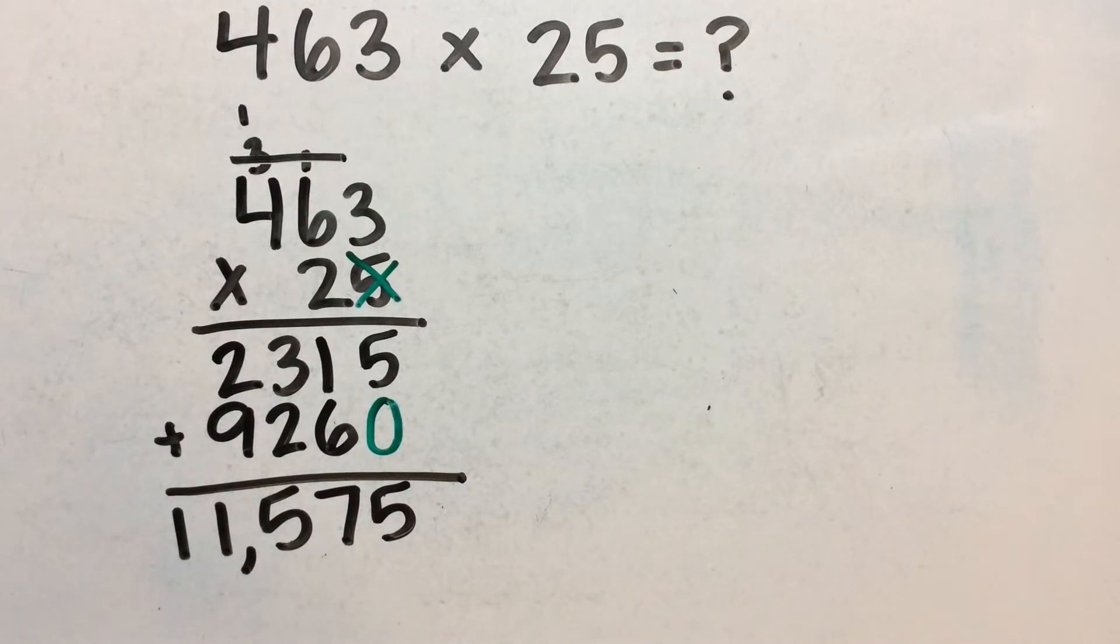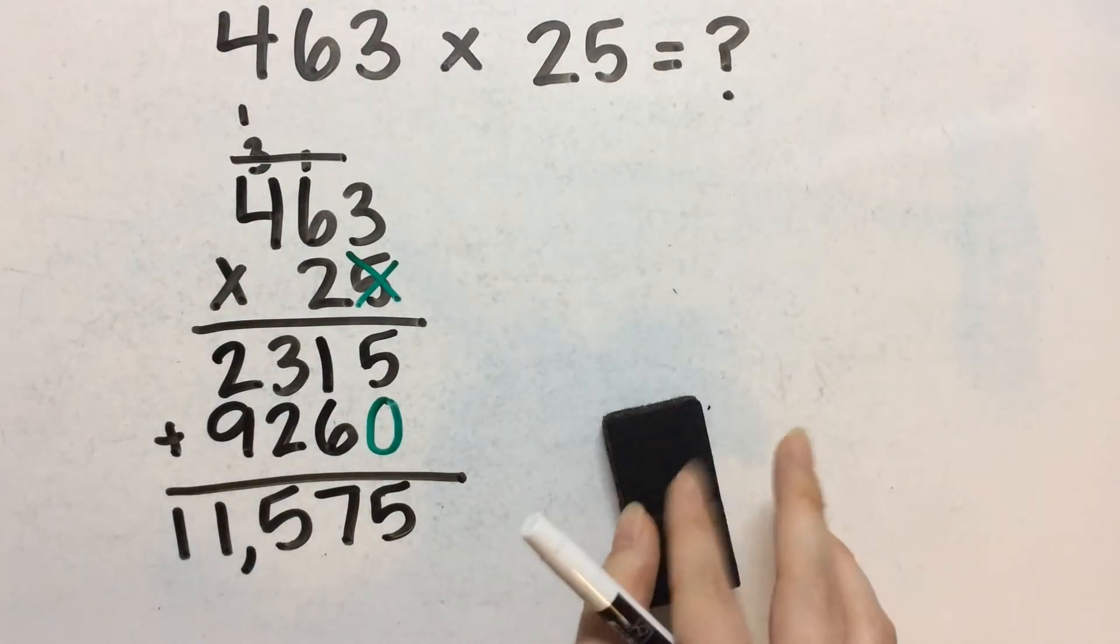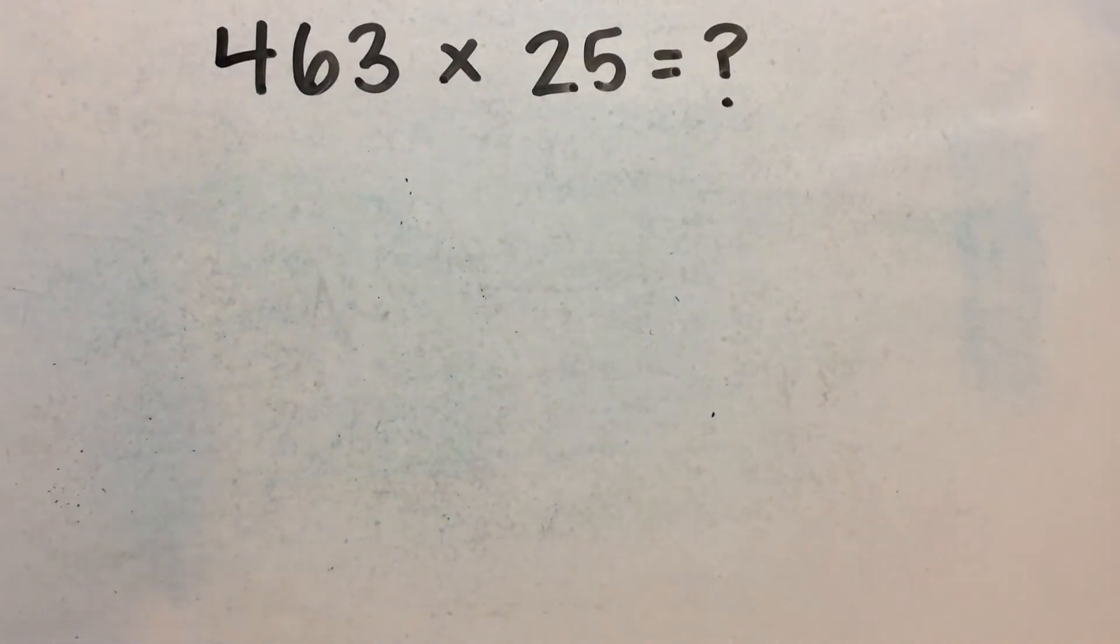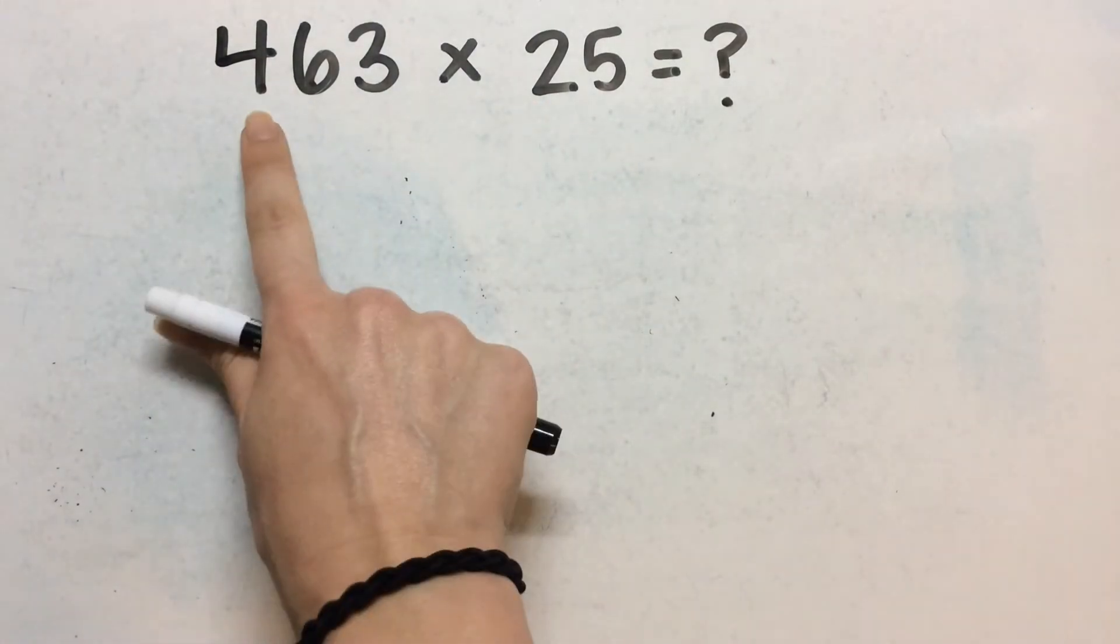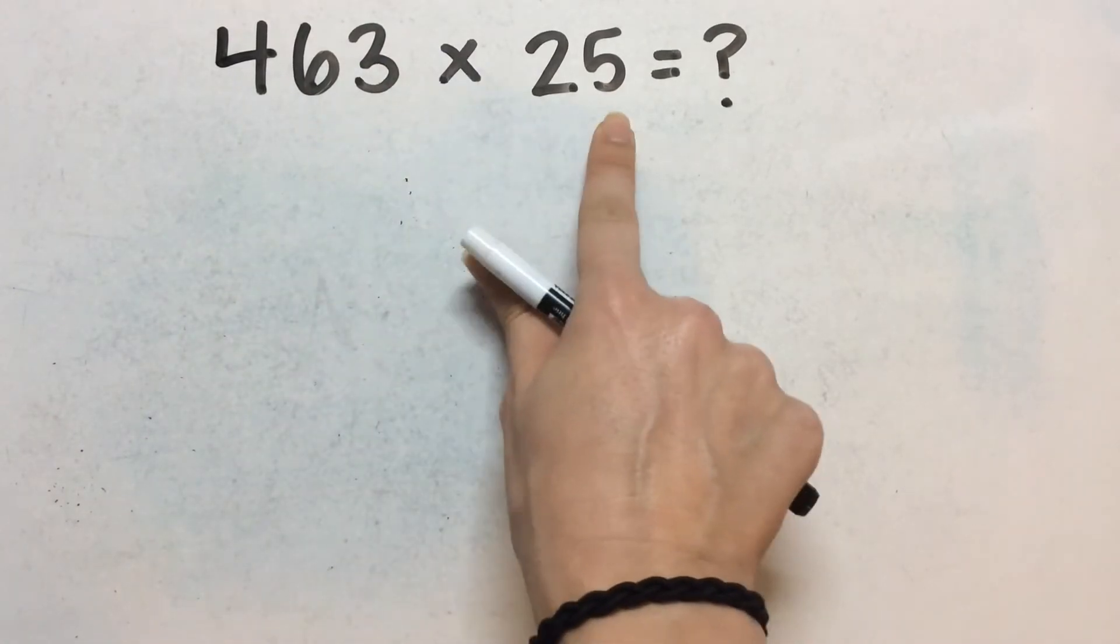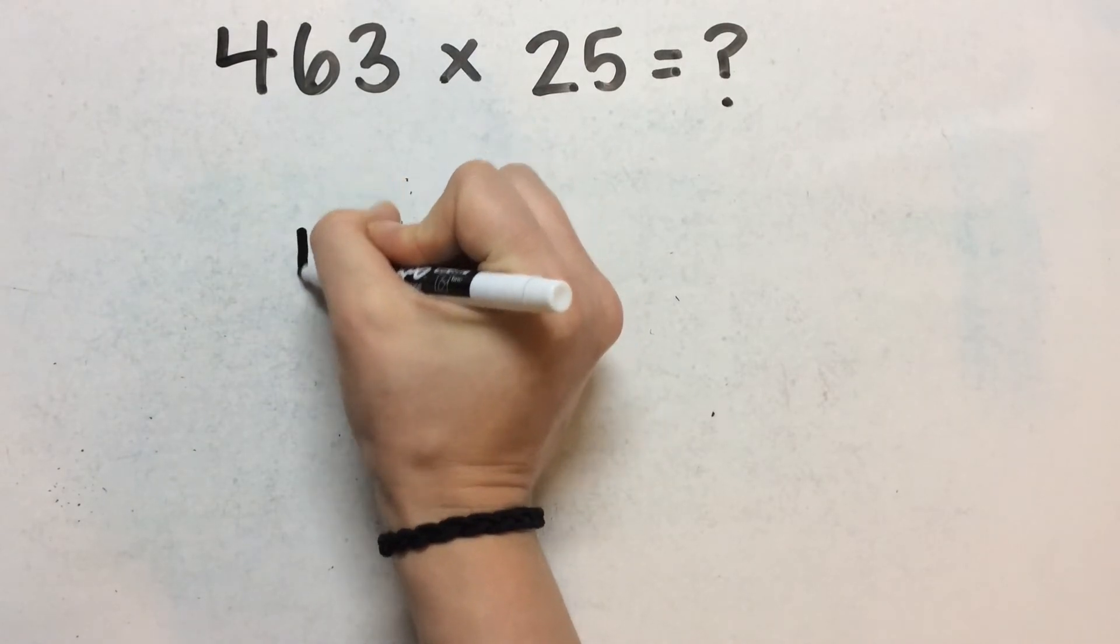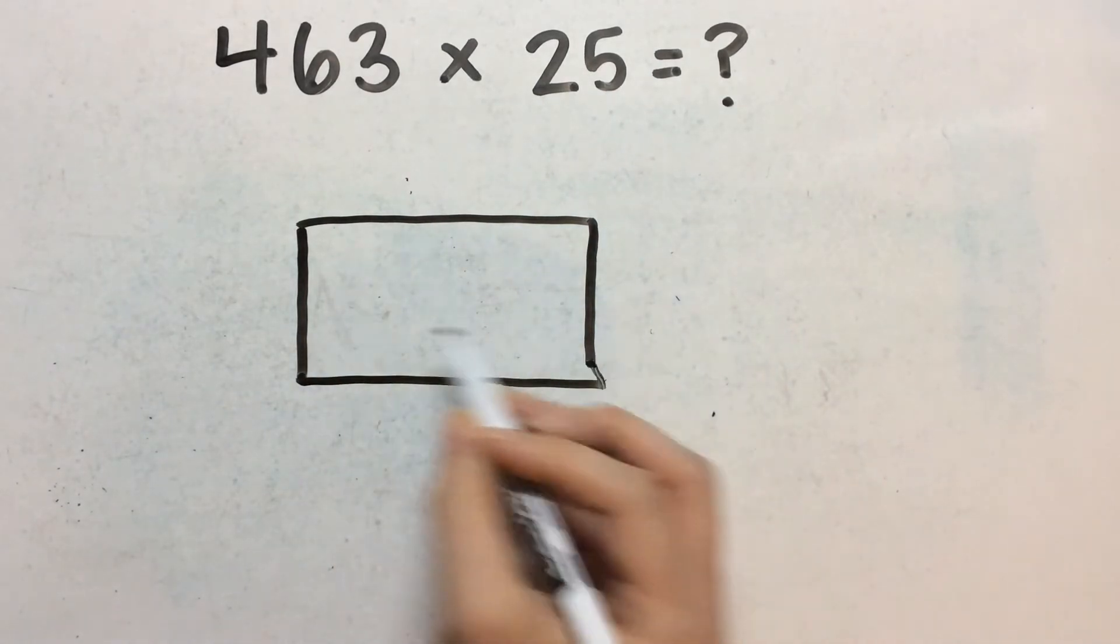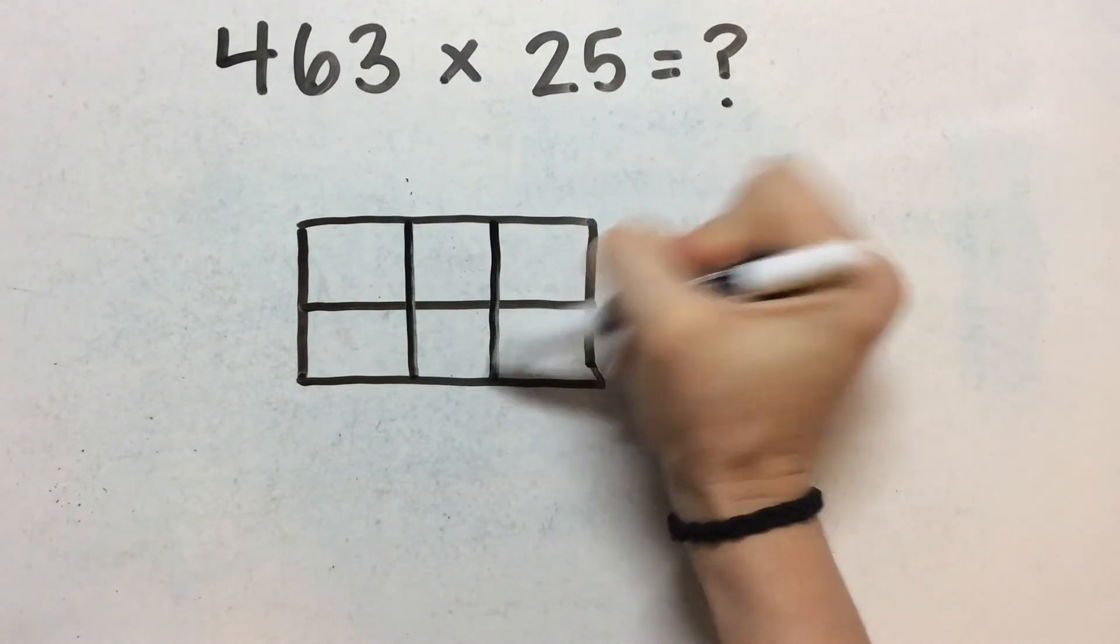Now I'm going to erase this and leave this answer. I'm going to show you the area model. Hopefully we get the same answer. So with the area model, you want to take apart these place values. And so in 463, we have three place values and 25, we have two. So we're going to make a three by two area model by drawing out a rectangle like this, cutting it in two pieces here and then three pieces here.